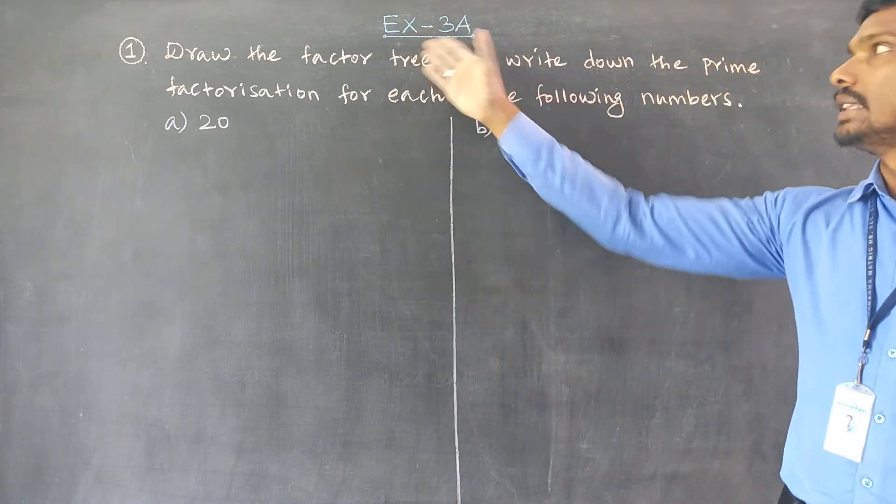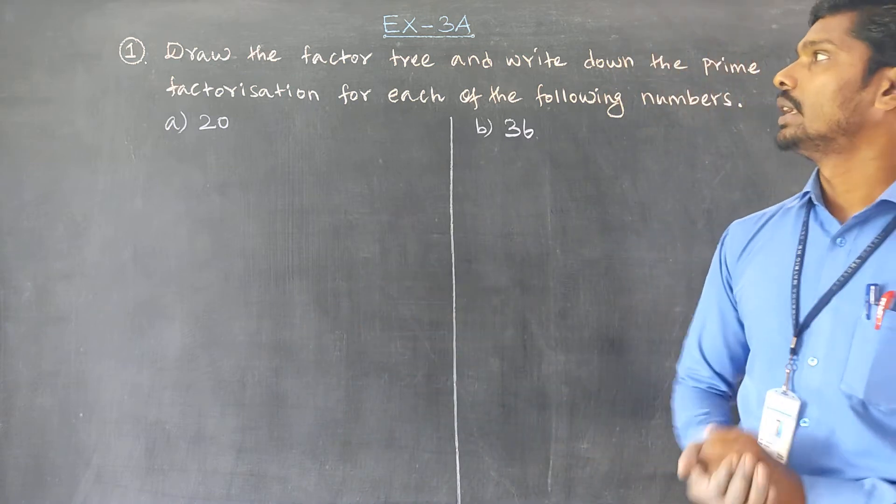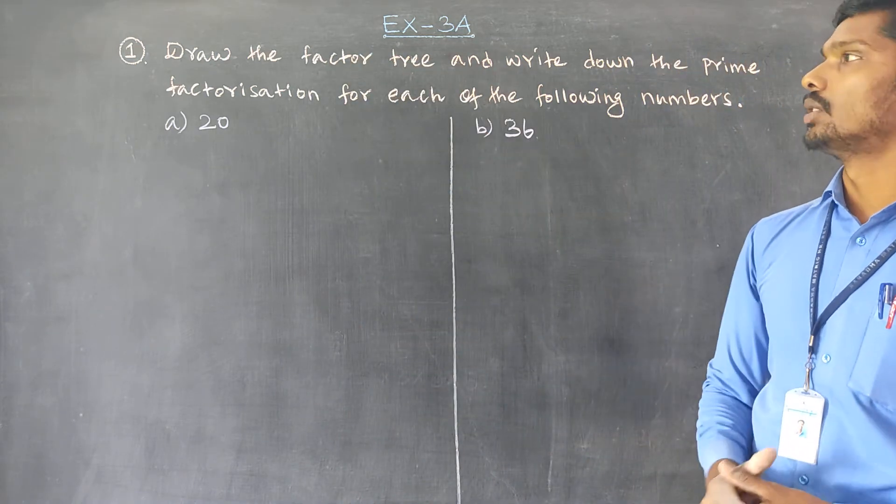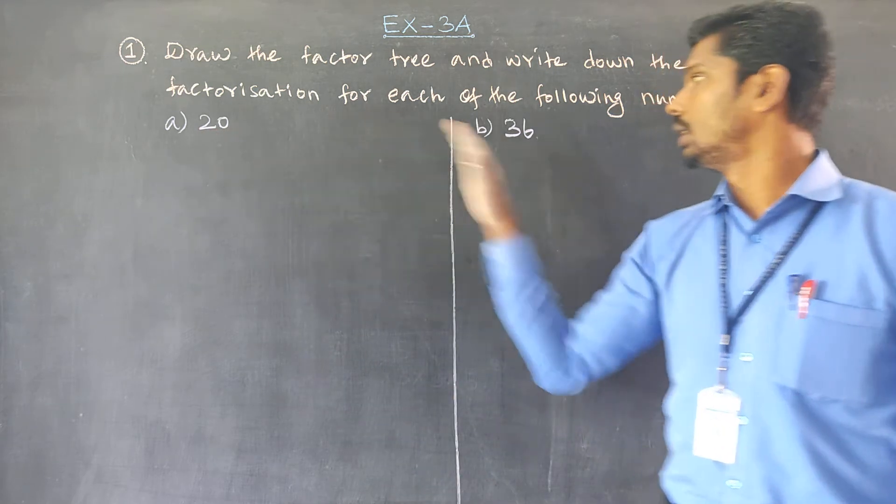Hey students, Exercise 2A is question number 1. Draw the factor tree and write down the prime factorization for each of the following numbers: 20 and 36.